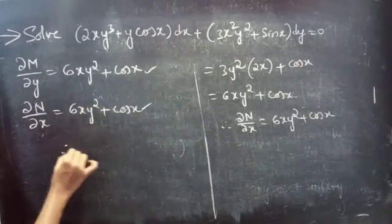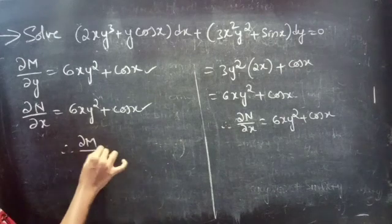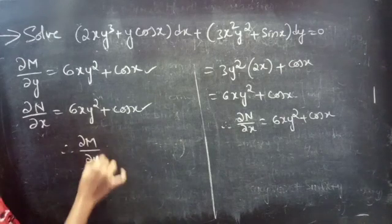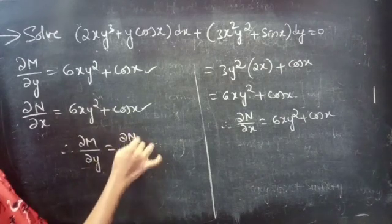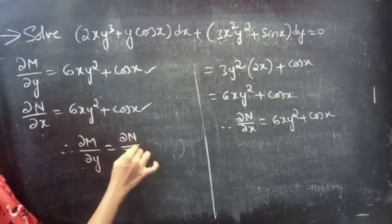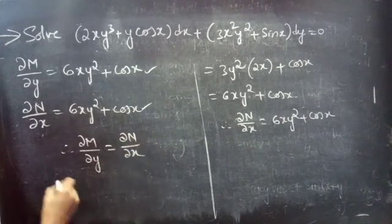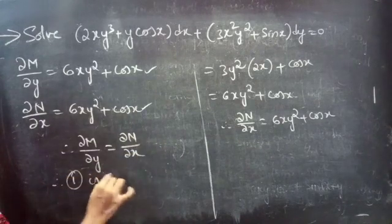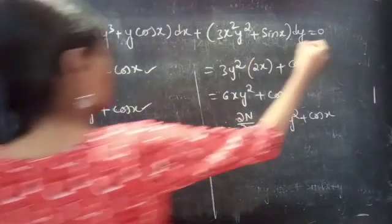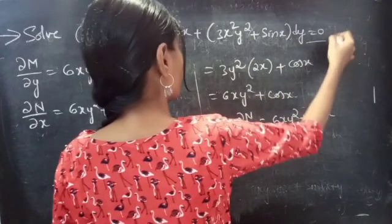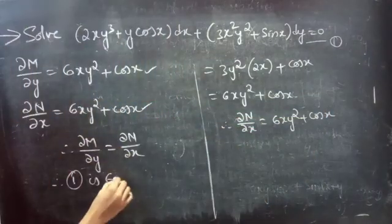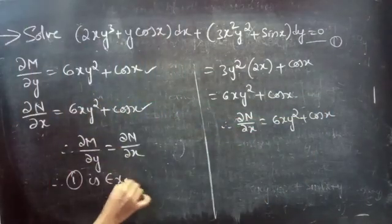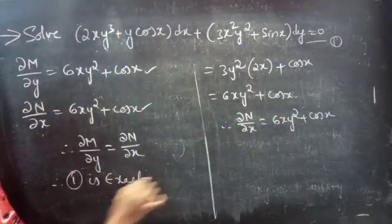Therefore, partial derivative of M with respect to y equals to partial derivative of N with respect to x. From this, we can say that the given equation is an exact equation.